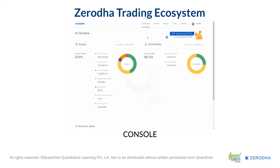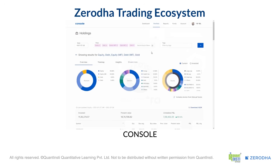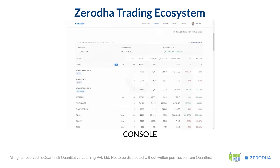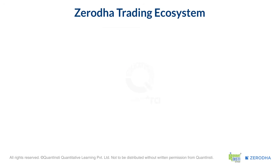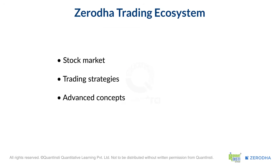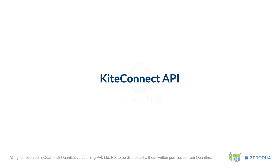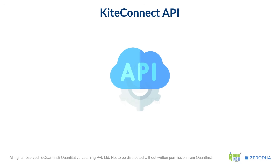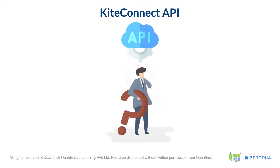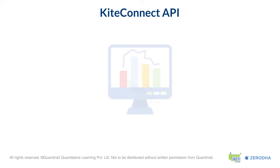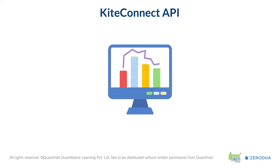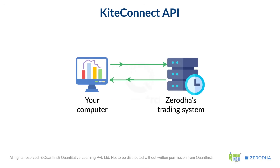If you want to learn more about the stock market, trading strategies, or advanced concepts, check out Varsity — it offers in-depth, easy-to-understand lessons for free. For this course, our main focus will be the KiteConnect API, which is what allows you to build algorithmic trading systems. Think of it as a set of tools that allows your computer program to directly talk to Zerodha's trading system.